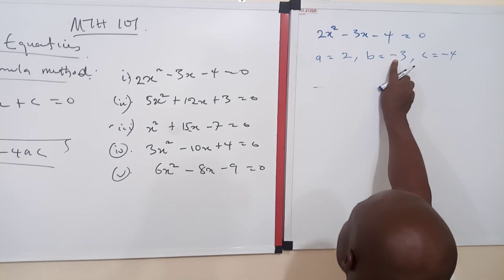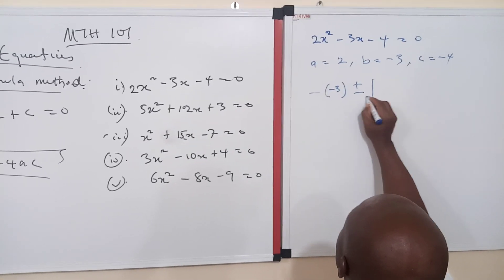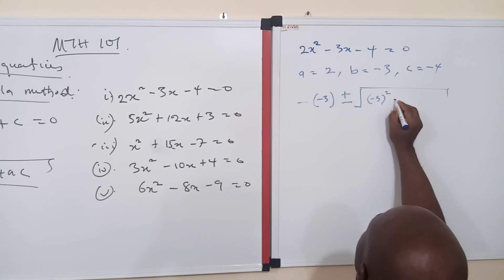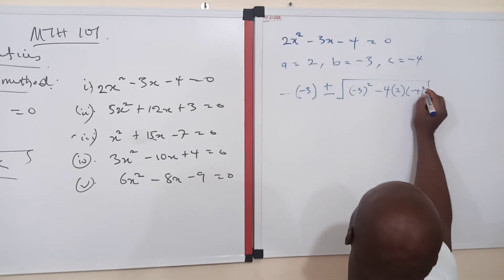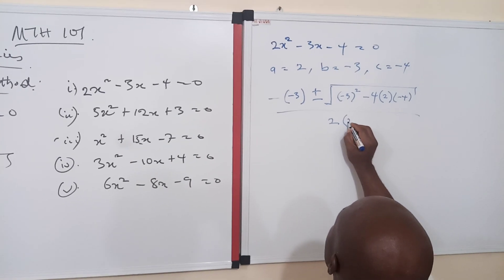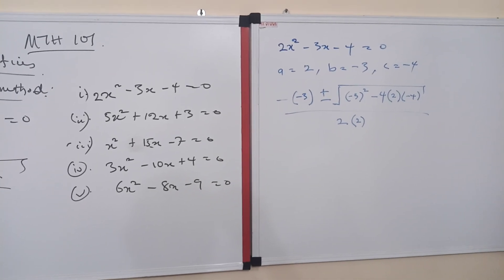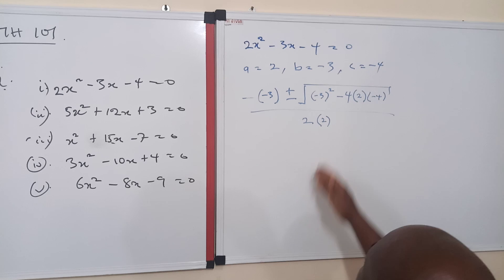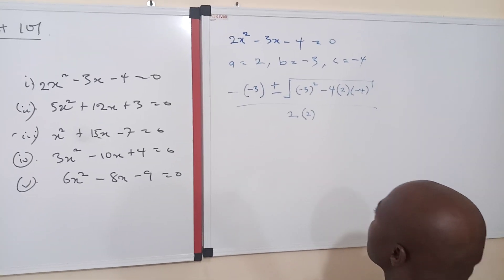We have negative b. Well, b here is already negative 3, so we have negative of negative 3, plus or minus the square root of b squared. b is negative 3, all squared, minus 4 times a, which is 2, times c, which is negative 4, all over 2 times a, where a is 2. We have succeeded in plugging all the various constants and coefficients into the equation. The next thing is just to simplify this and see how the system looks.